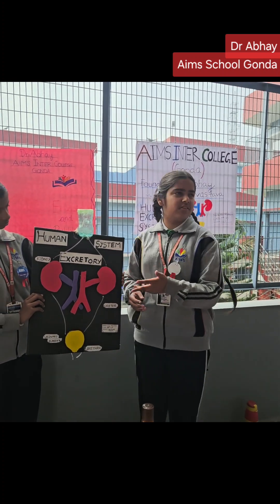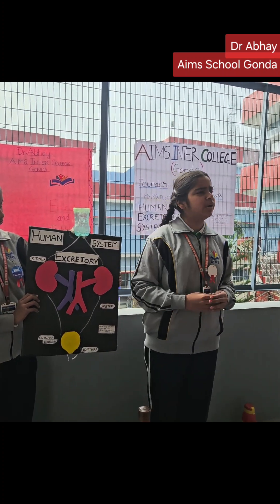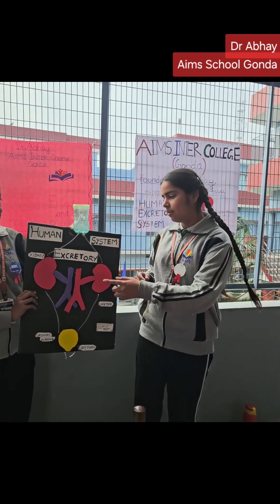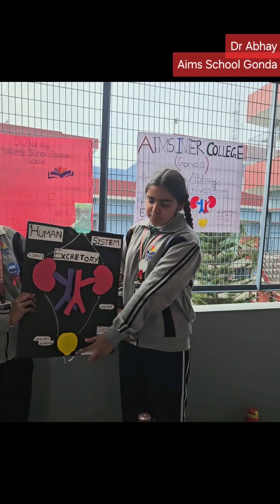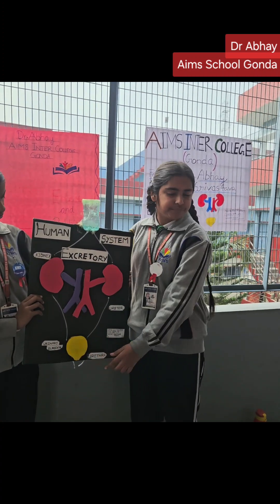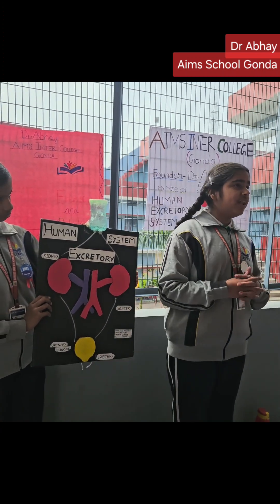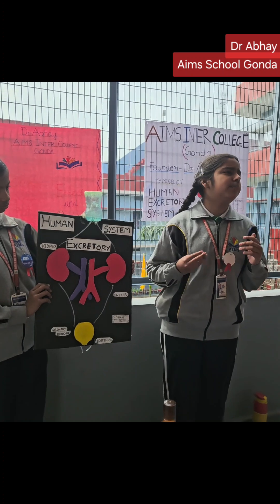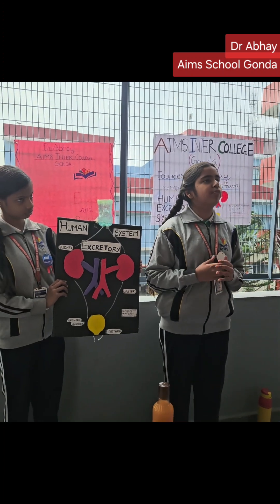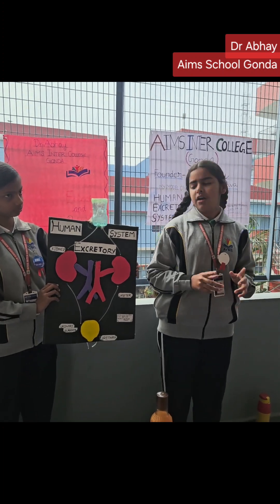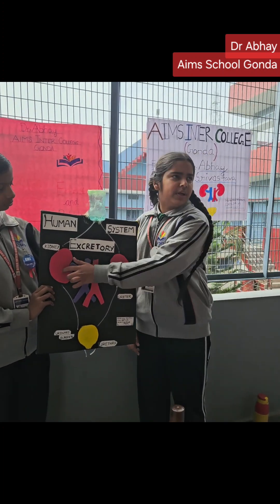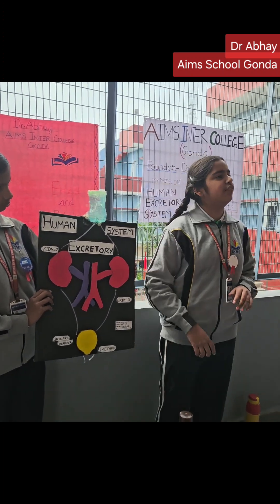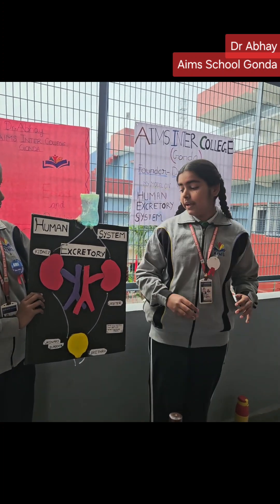The human excretory system is made up of two kidneys. We have ureters. I am going to tell you about kidneys. The kidneys filter the blood in our body to remove urea from the blood. We have two bean-shaped kidneys, each about the length of our fist. The kidneys produce a combination of excess water and waste called urine.